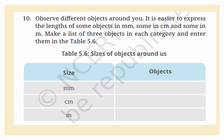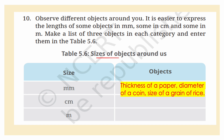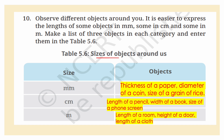Observe different objects around you. Some lengths are easier to express in millimeters, some in centimeters, and some in meters. Objects measured in millimeters: thickness of a paper, diameter of a coin, size of a grain of rice. Objects measured in centimeters: length of a pencil, width of a book, size of a phone screen. Objects measured in meters: length of a room, height of a door, length of a cloth.